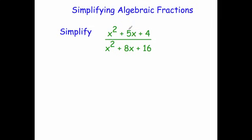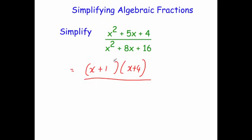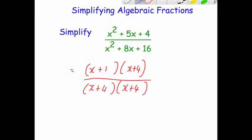This time we've got x squared plus 5x plus 4 over x squared plus 8x plus 16. We're going to factorise these quadratics and then cancel down. The top line, x squared plus 5x plus 4, factorises to x plus 1 times x plus 4. The denominator, x squared plus 8x plus 16, factorises to x plus 4 times x plus 4. We have x plus 4 on both top and bottom, so cancelling those out leaves x plus 1 over x plus 4.